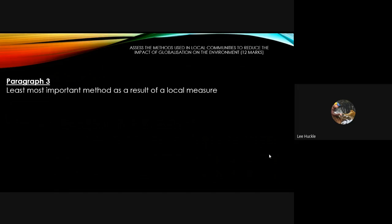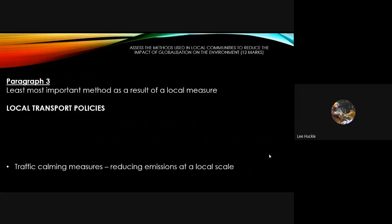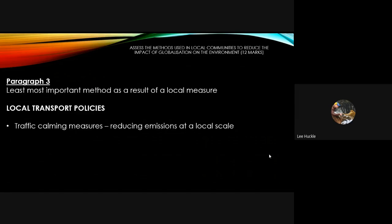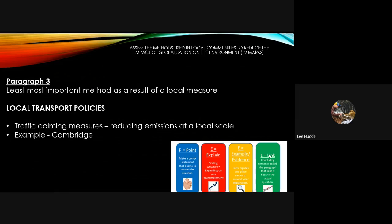The final paragraph covers the least important method — though you may rank it differently. I would look at local transport policies: traffic calming measures and emission-reducing methods at a local scale, since people are using more transport due to improved access and rising wealth — all results of globalization. The example I would use is the transport calming and emission-reducing measures in Cambridge. Use PEEL: point on local transport policies, explain traffic calming and emission reduction, bring in the Cambridge example, and link back to the question.